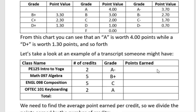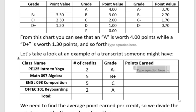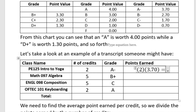I'm going to take the number of credits of the class and calculate the number of credits times the point value of their grade. So this grade was an A minus — the point value is going to be 3.70 — and if I multiply 2 times 3.70 I get 7.40. So that's the total points for that particular class.